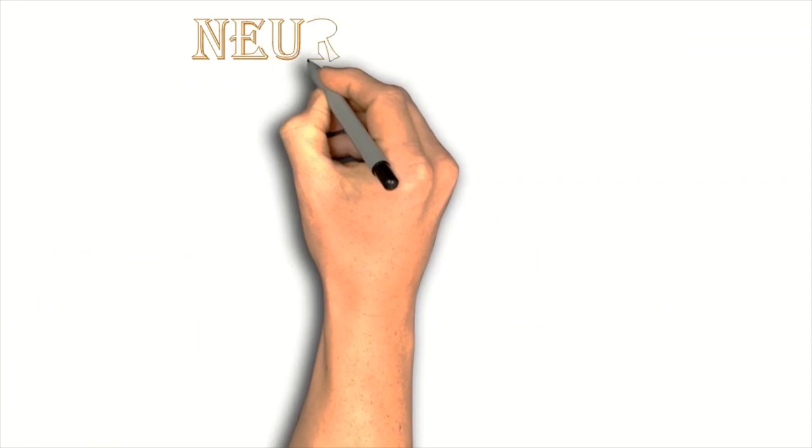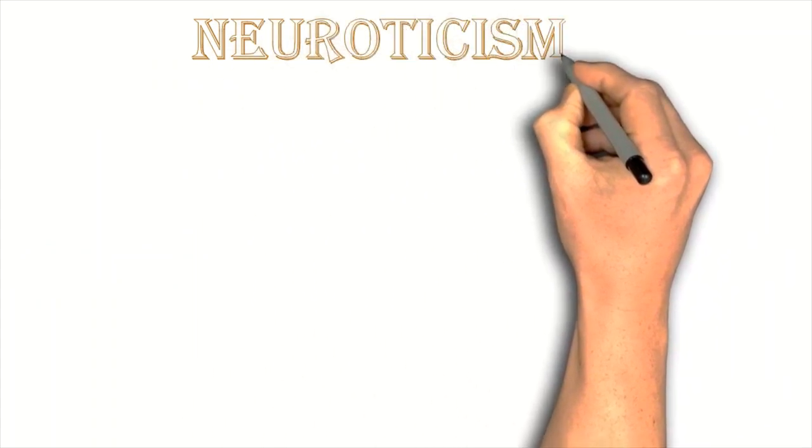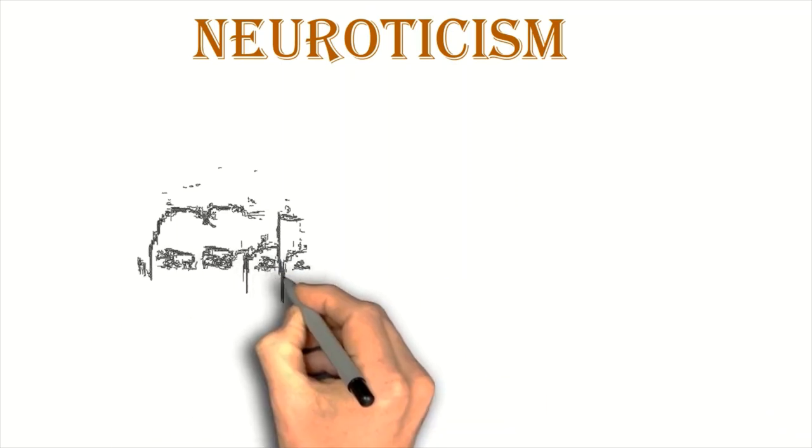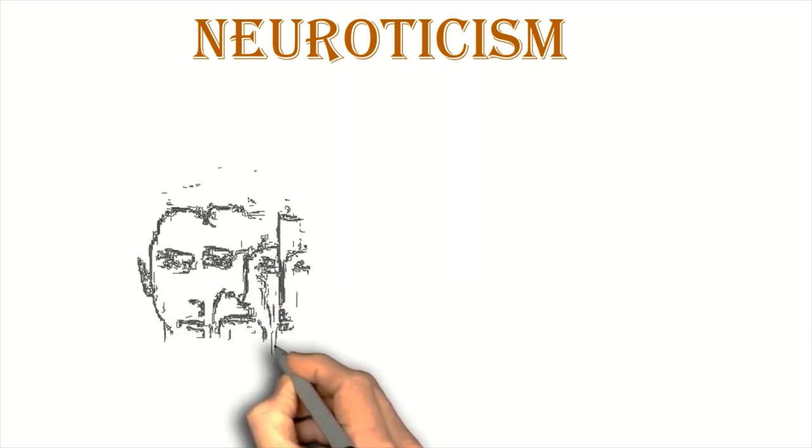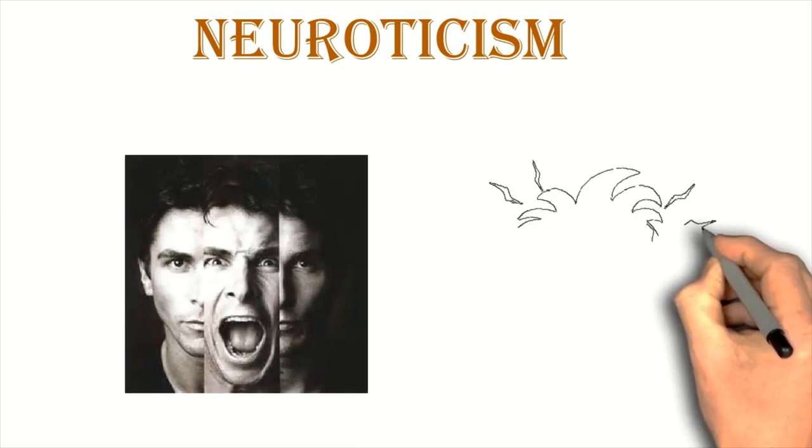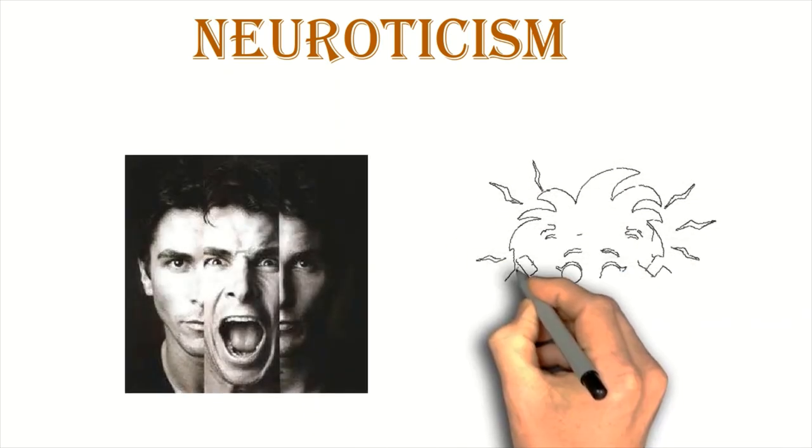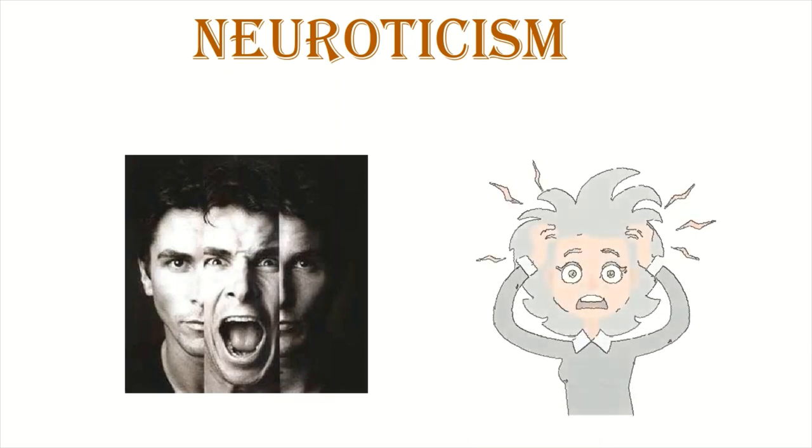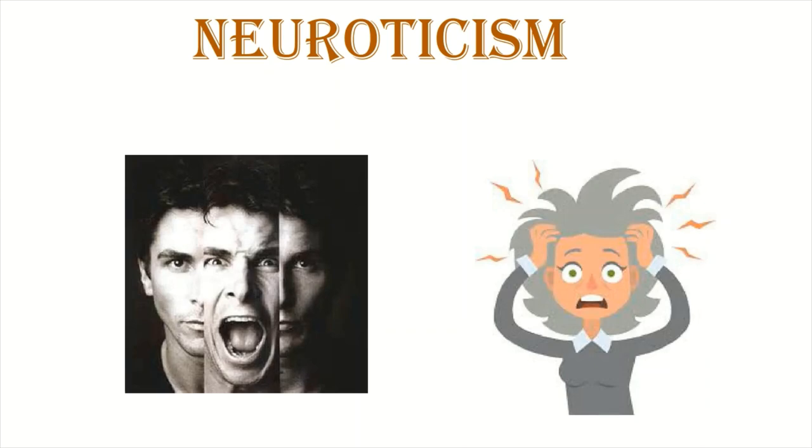The last category is neuroticism. This category is a mood changer. It means that the mood is very quickly changed. It is very irritated. It is sad. This category has more anxiety. It is a bit of tension. They can't survive in a stressful environment.